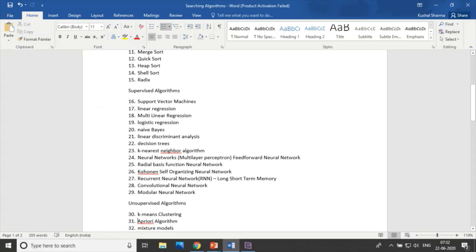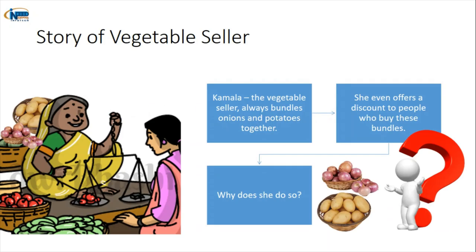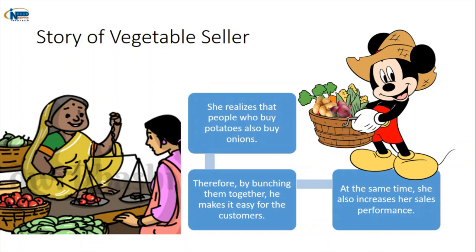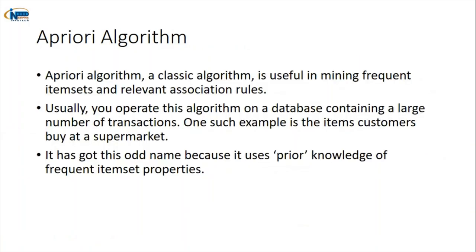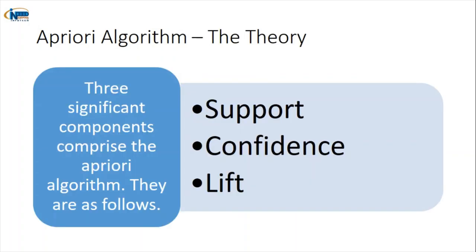The thirty-first algorithm is the Apriori algorithm. The best example is vegetable sellers who keep potatoes and onions together, knowing that if someone buys potatoes, 8 out of 10 people will also buy onions. This is association. Apriori works on association rules, and the three major components are support, confidence, and lift — calculated to create association rules amongst items.